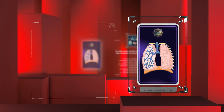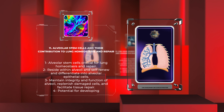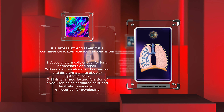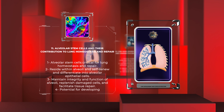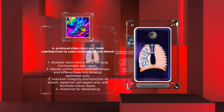In addition to epithelial stem cells, alveolar stem cells have emerged as critical players in lung homeostasis and repair. Alveolar stem cells reside within the alveoli and have the capacity to self-renew and differentiate into alveolar epithelial cells. These stem cells play a vital role in maintaining the integrity and function of the alveoli.